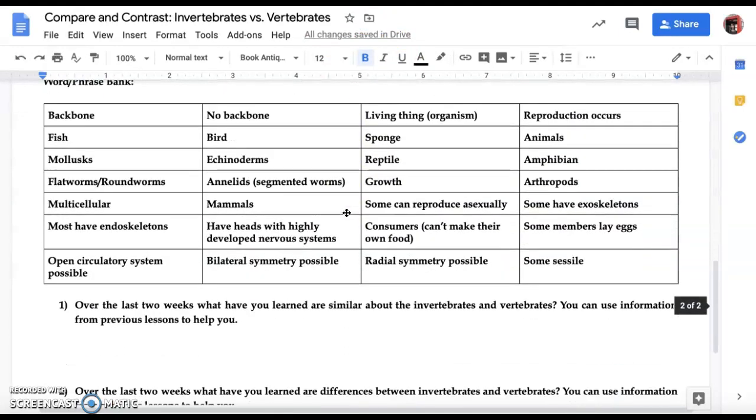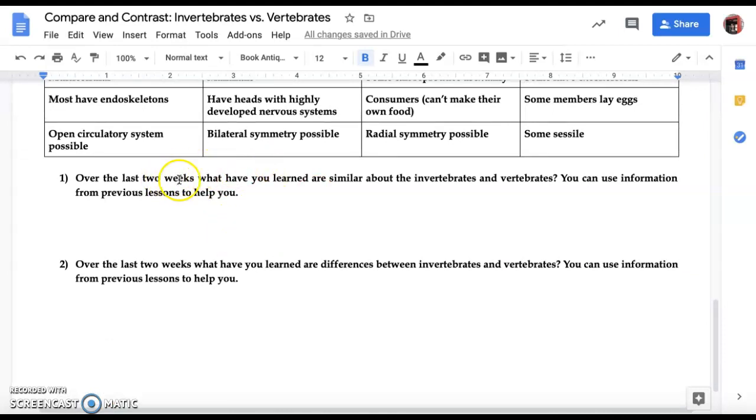There are also two questions after the end of this. You're going to have, over the last two weeks, we've been going over invertebrates and vertebrates along with classification. All you have to do is give me some similarities and differences. You can look at the Venn diagram. You can also include things from previous lessons as well.